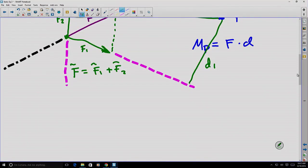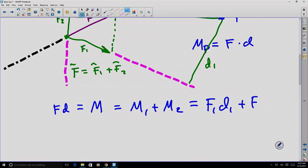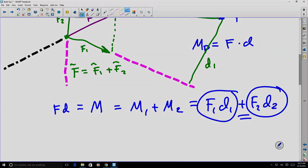Well, all Varignon is basically saying is that if I wanted to find the moment that corresponds with F times D, another way I could do it is find the sum of moments 1 and 2 where each of those would be F1 times D1 and F2 times D2. In other words, the moment of this sum is equal to the sum of the two separate moments.